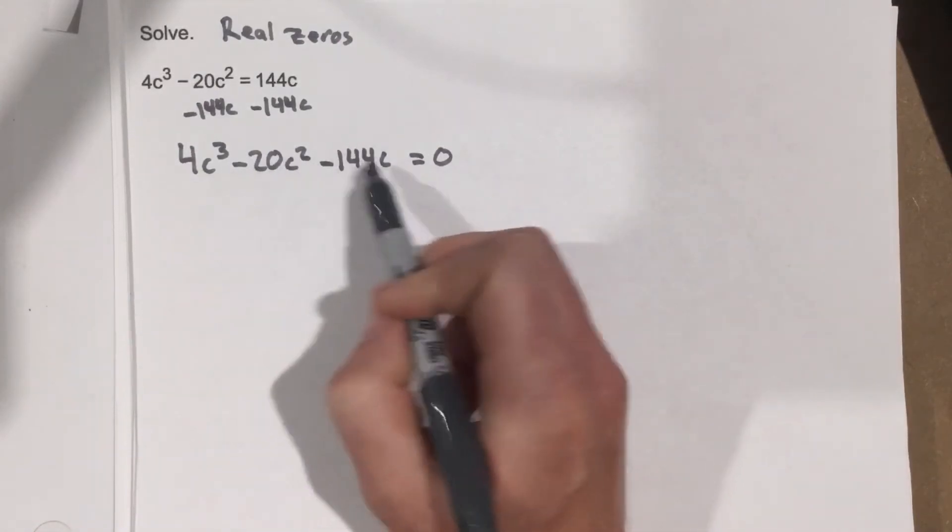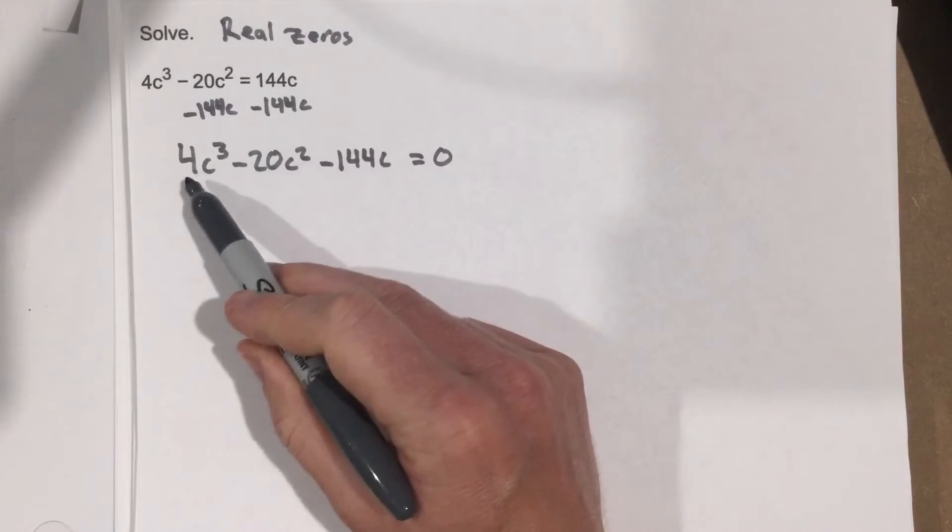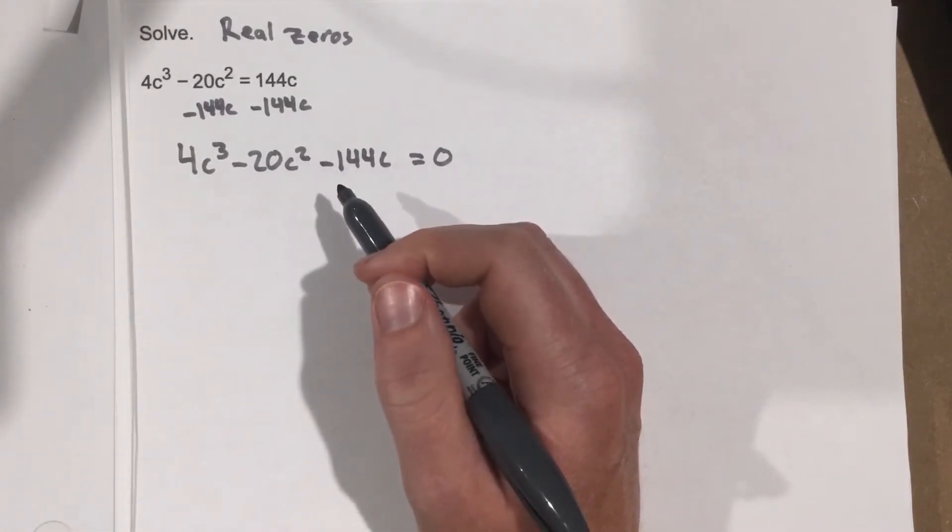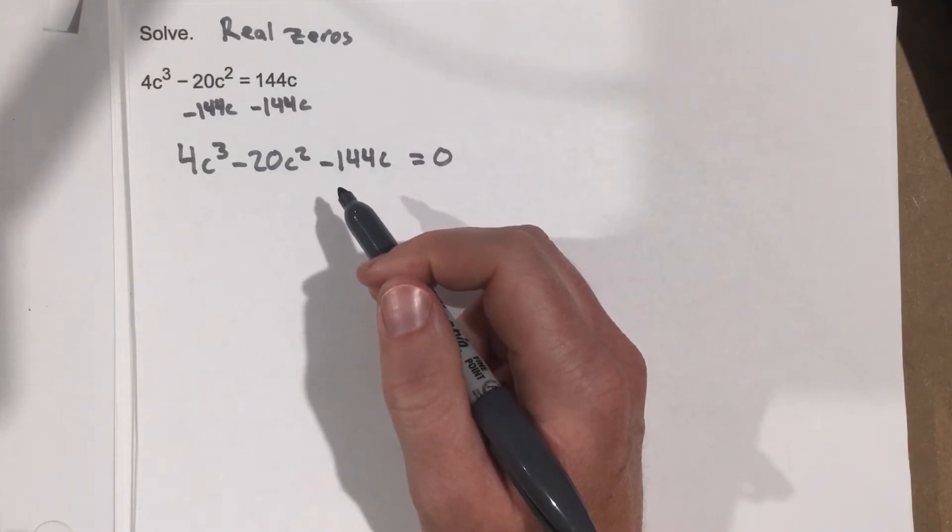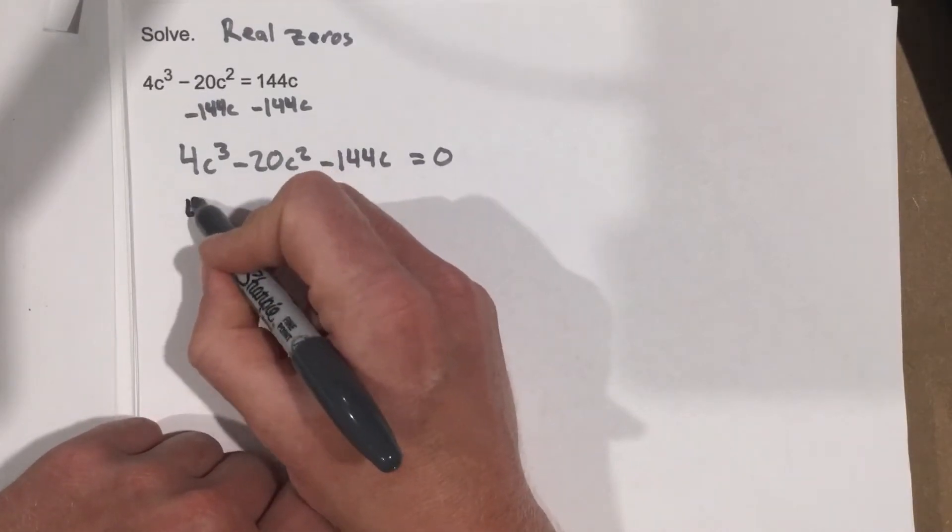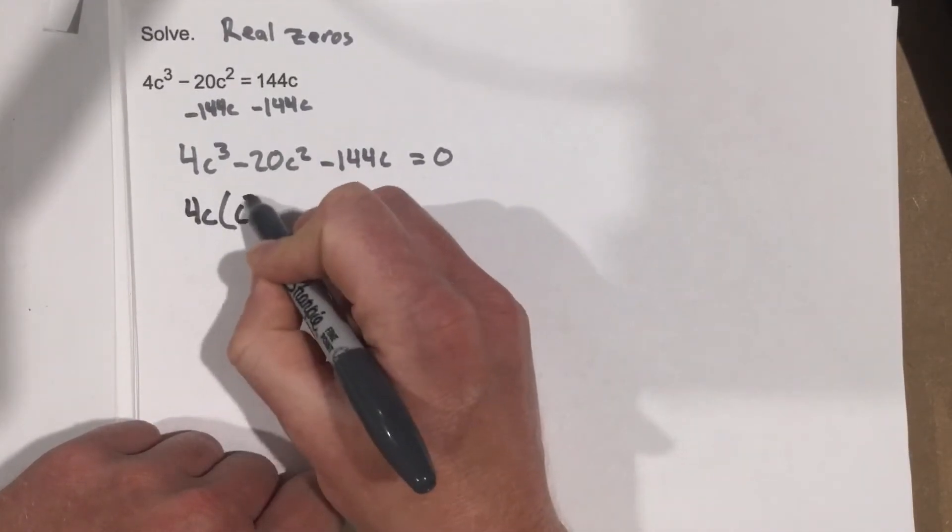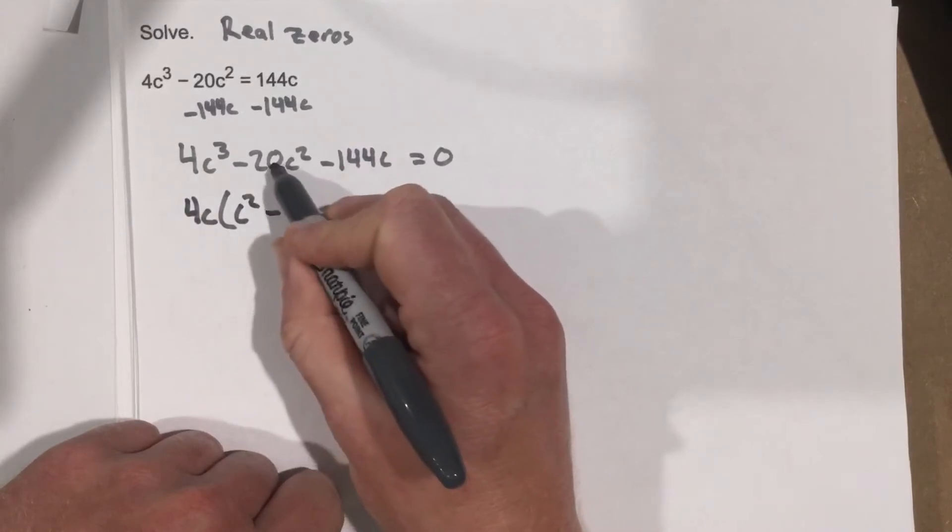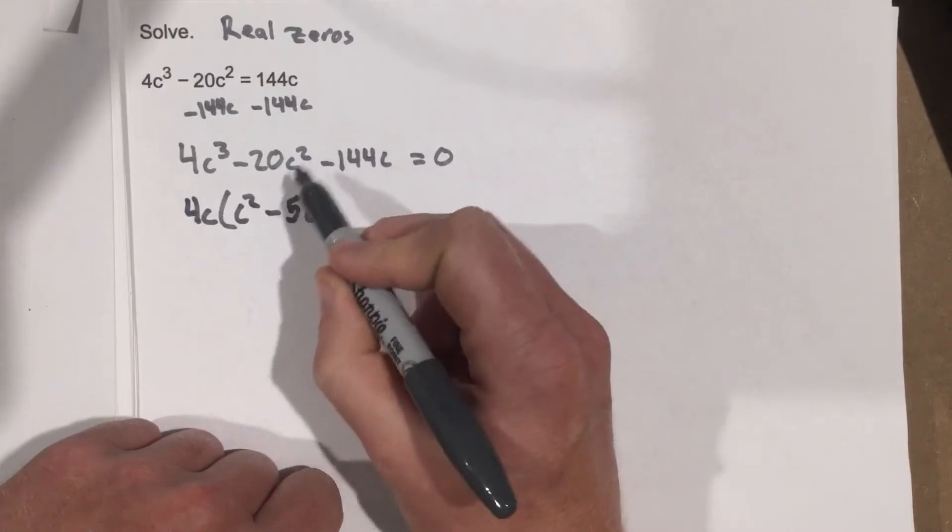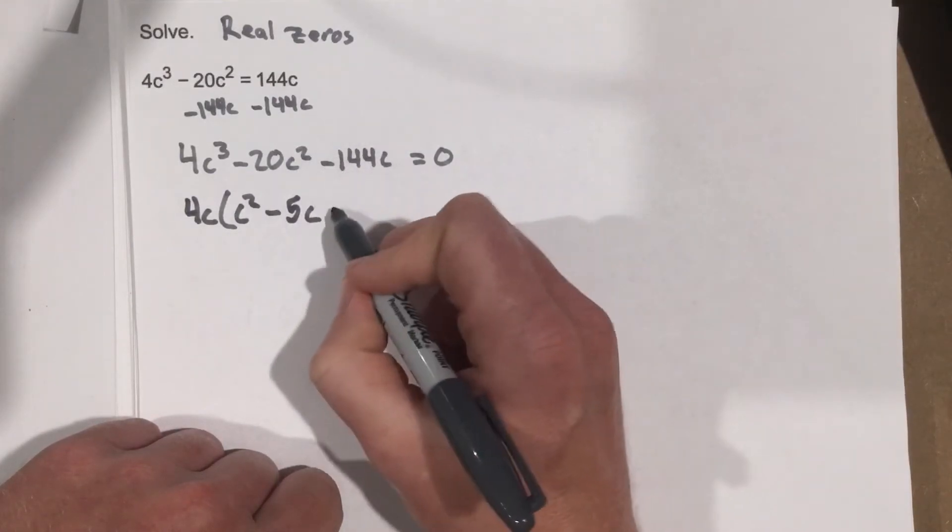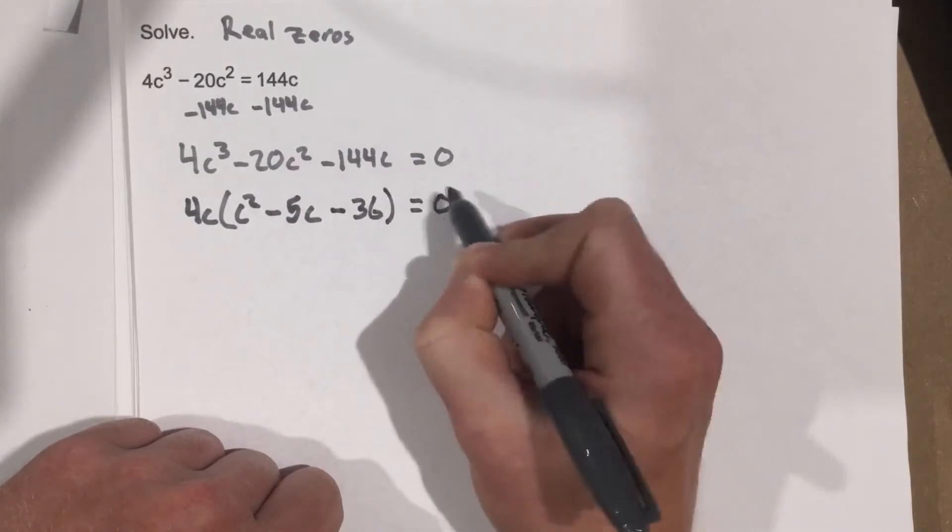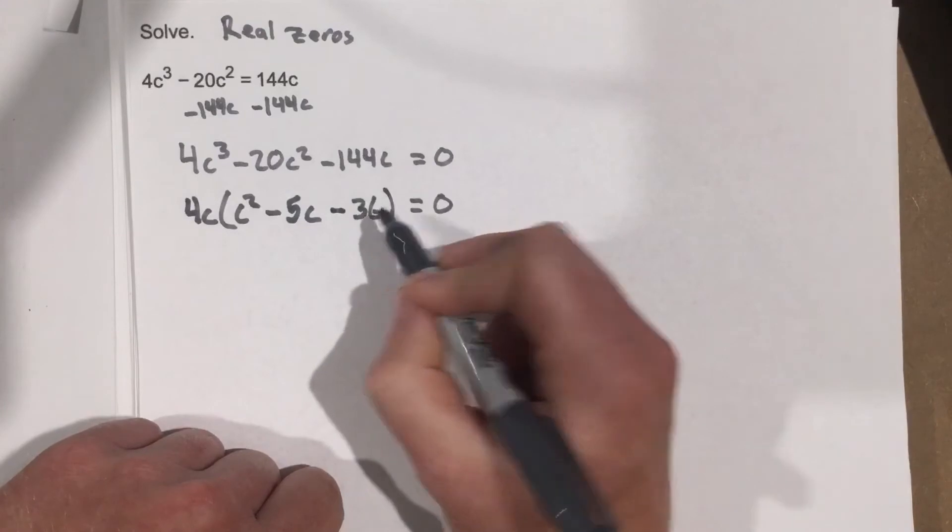Now I'm going to try and factor out a c from each term, but I also want to see, can I factor a 4 out? I know I can factor a 4 out of 20. What about 144? 144 divided by 4, 36. So I can factor a 4 out of all of that. I'm going to factor a 4c out. That leaves you with c² minus 5c, and then I'll end up with minus 36 equals 0.